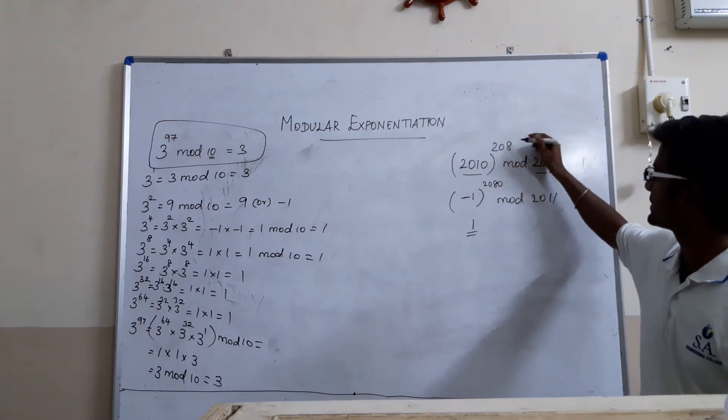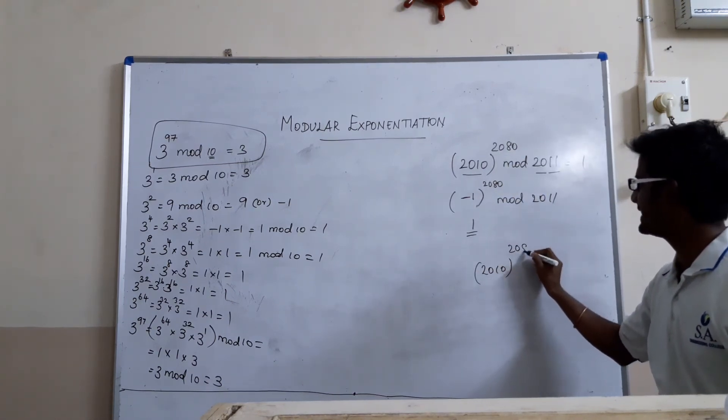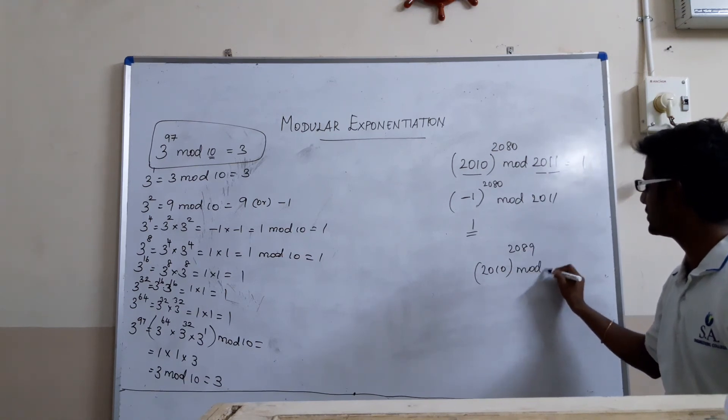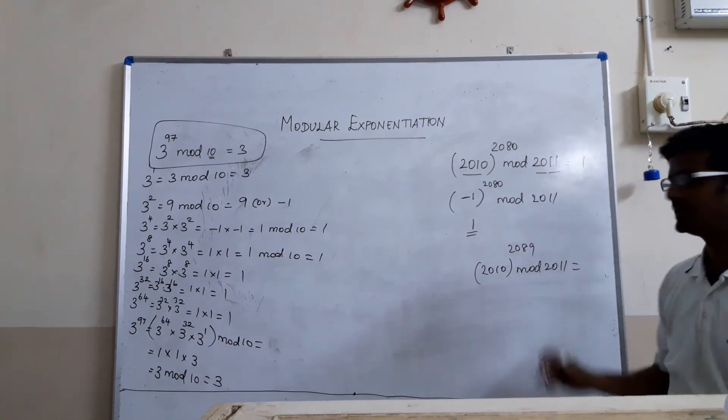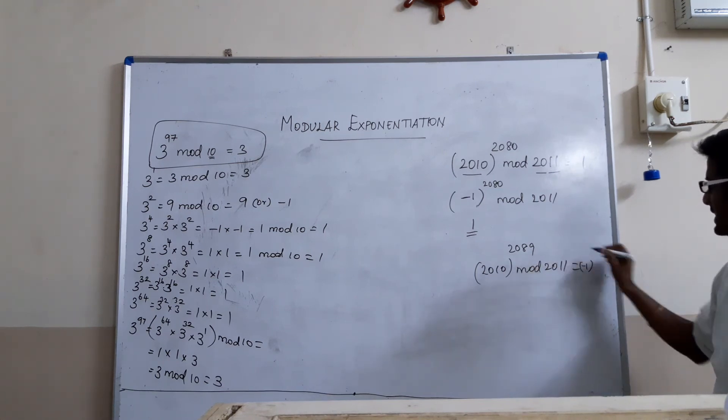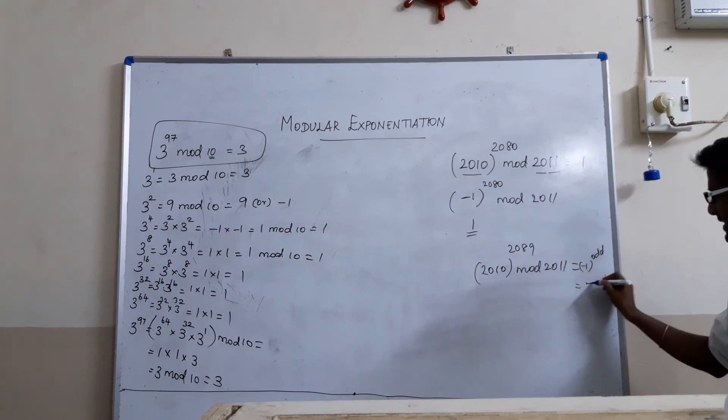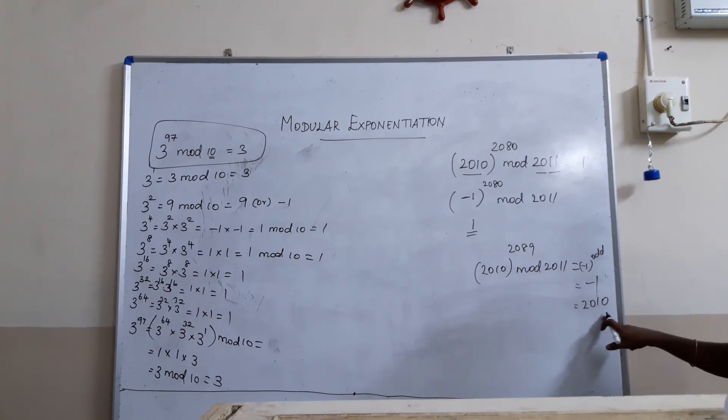In case, if it is 2010 whole power 2089 mod 2011, the answer for this is minus 1 whole power. This is an odd number. So, minus 1 if you have an odd number as a power, we will get minus 1 only. We will convert that minus 1 into positive number. For this case, it will be 2010 only.